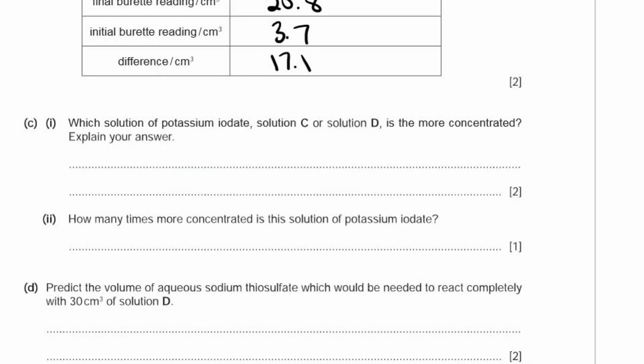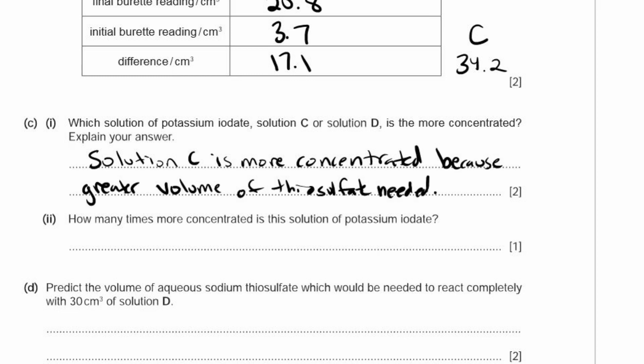C1. Which solution of potassium iodate, solution C or solution D, is the more concentrated? Explain your answer. Solution C took 34.2 cm³ and solution D took 17.1 cm³. Solution C is more concentrated because a greater volume of thiosulfate was needed to react with the potassium iodate for solution C.